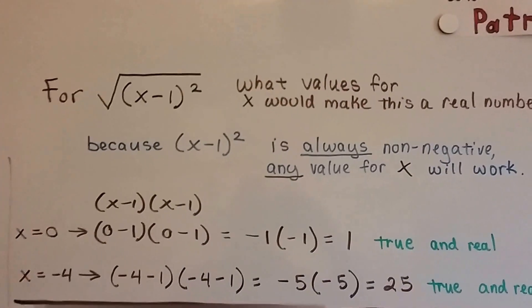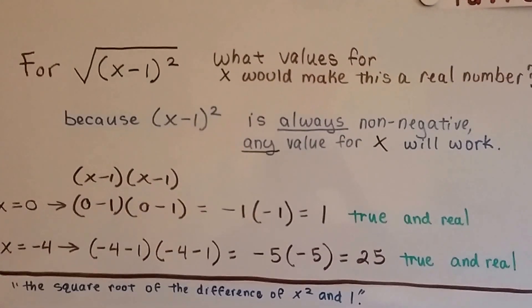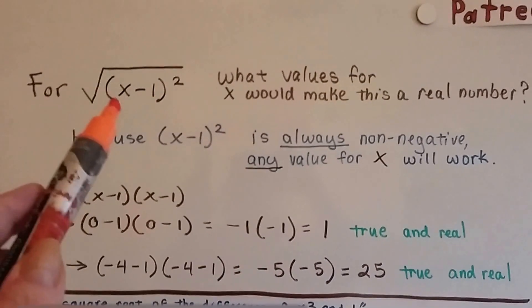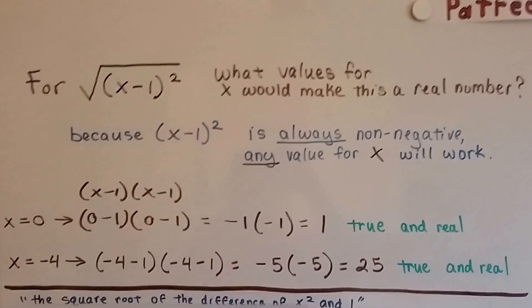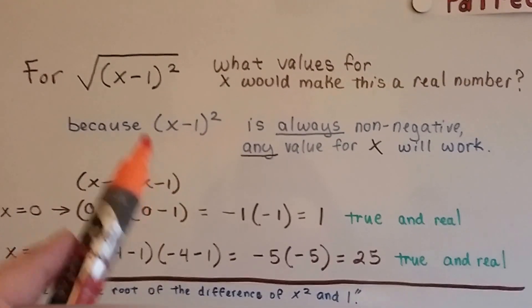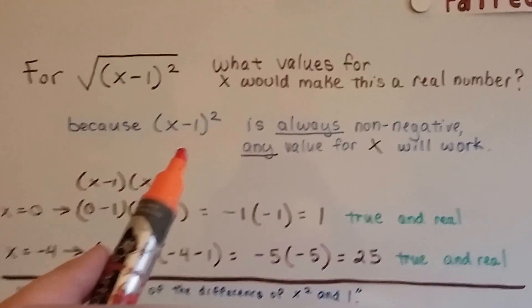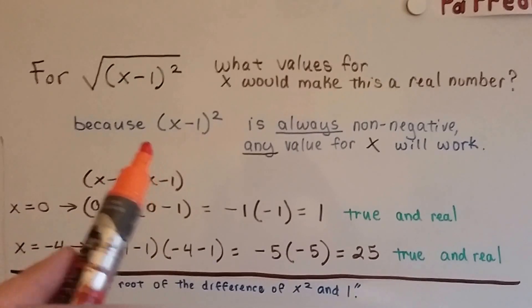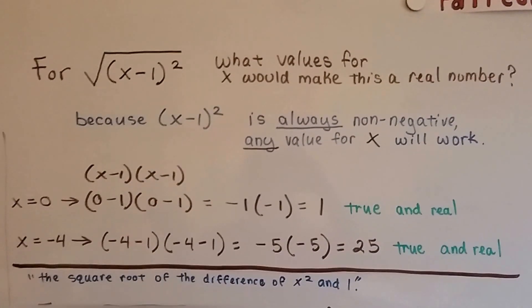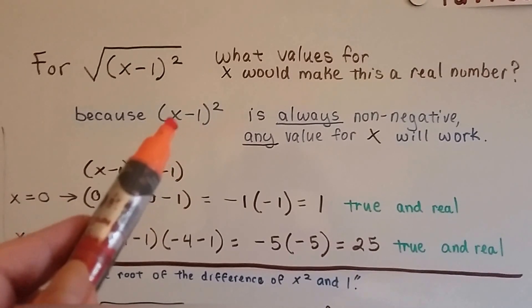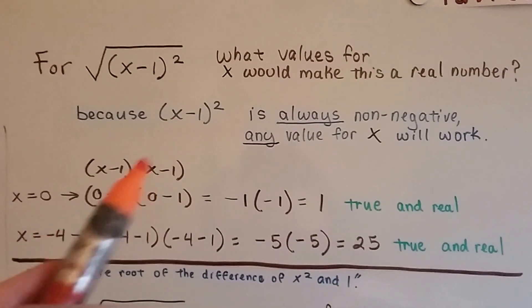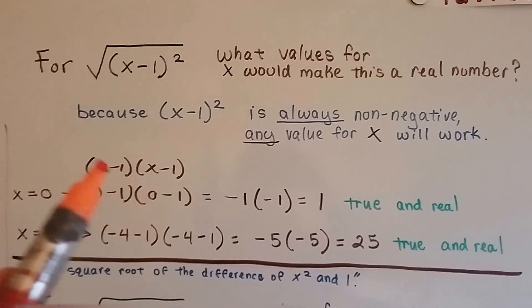So, look at this one. What values for x would make this a real number? Well, this actually means x minus 1 times x minus 1, doesn't it? And, x minus 1 squared is always non-negative, so any value for x will work. No matter what we multiply this by, no matter what we make this x and multiply it by, it's going to be a non-negative.